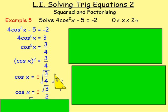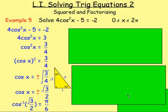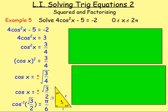If you get cos x equals root three over two, it should be screaming out at you that that is one of your exact values. Cosine is adjacent over hypotenuse, so that's going to be 30 degrees. 30 degrees in radians is pi over six, so inverse cos of root three over two gives you pi over six.